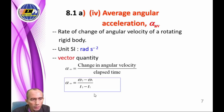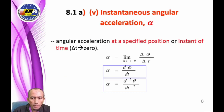Average angular acceleration is the rate of change of angular velocity of a rigid body. Its SI unit is radians per second squared, and it is a vector quantity. It equals the change in angular velocity over elapsed time: omega₂ minus omega₁ divided by t₂ minus t₁. Instantaneous angular acceleration is defined as the angular acceleration at a specified time, given by alpha equals the limit of delta omega over delta t, or dω/dt, or d²θ/dt².